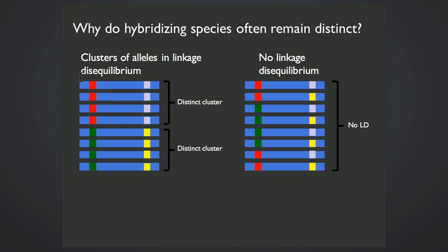So let's think of a species just as a cluster of alleles and linkage disequilibrium. Let's consider this first distinct cluster to be species one and species two represented by this distinct cluster here.